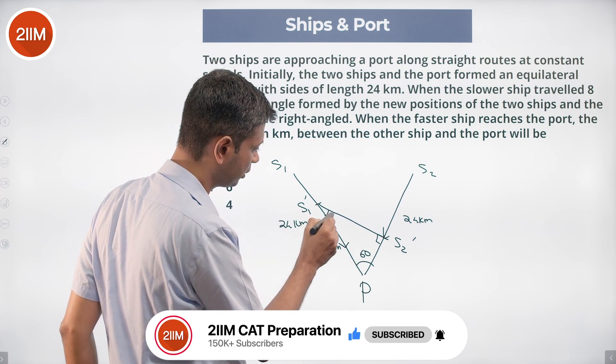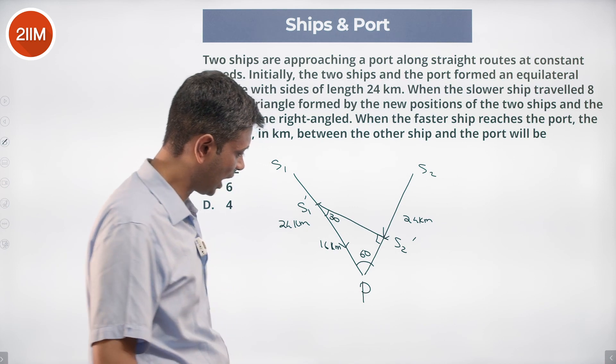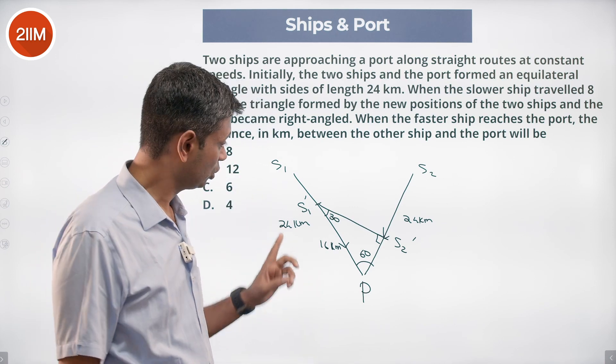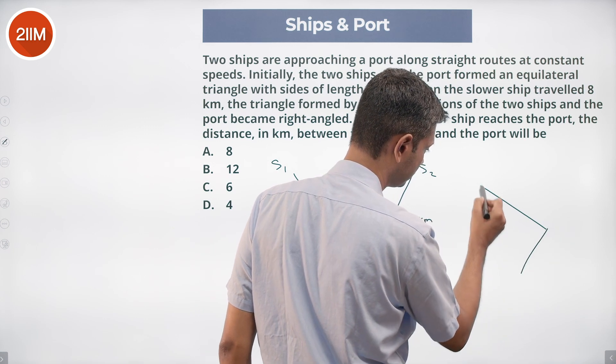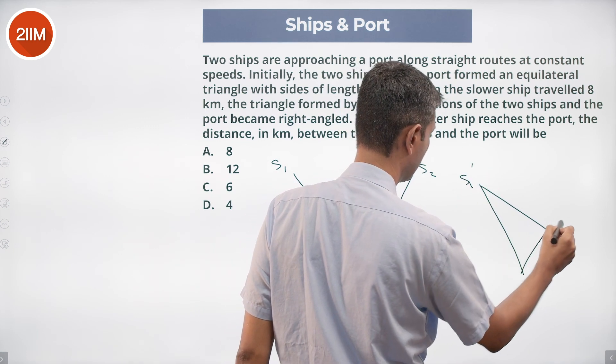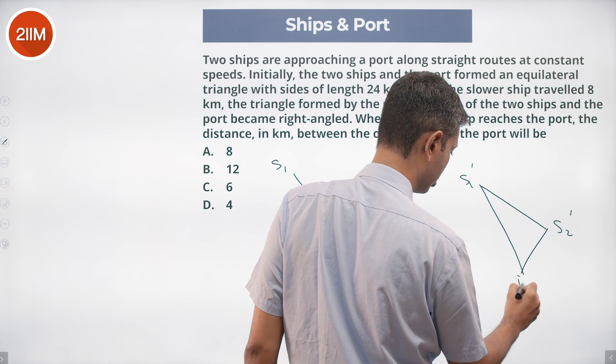The hypotenuse is 16, so s1 dash, s2 dash, p. I draw out this triangle s1 dash, s2 dash, p.